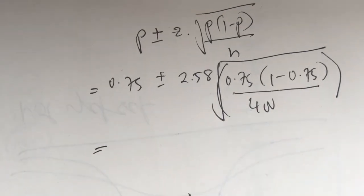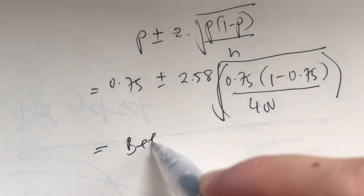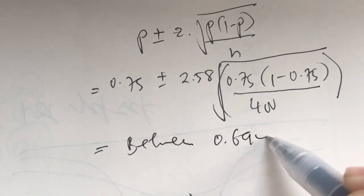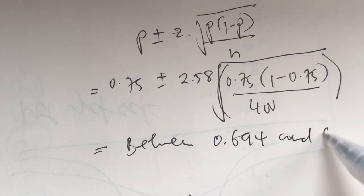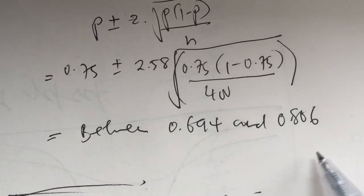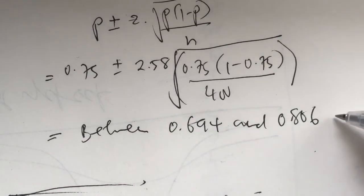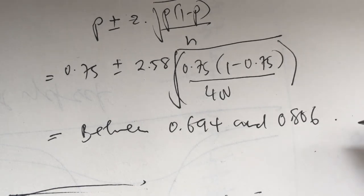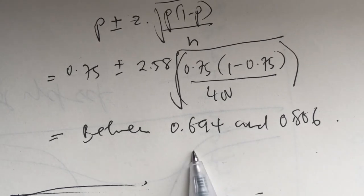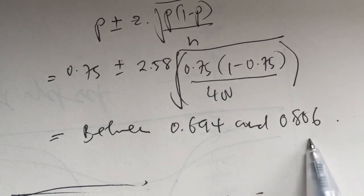I'll give you the answer straight away. It is between 0.694 and 0.806. How do we interpret? We say that we are 99% confident that the true population proportion is between 69% and 81%.